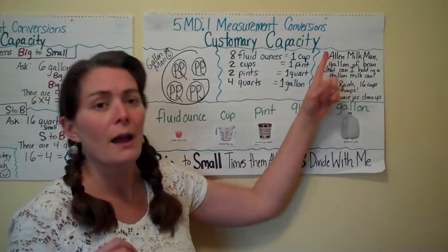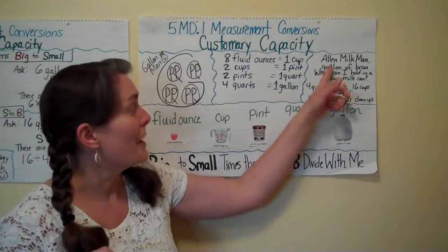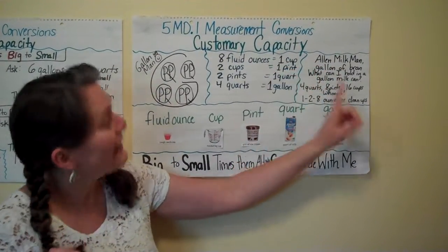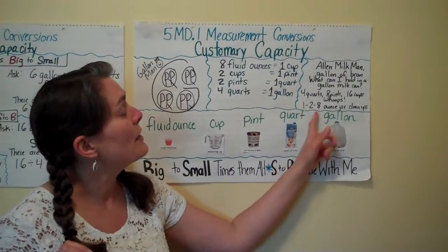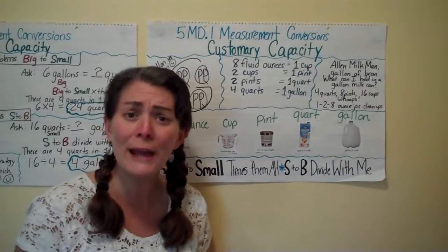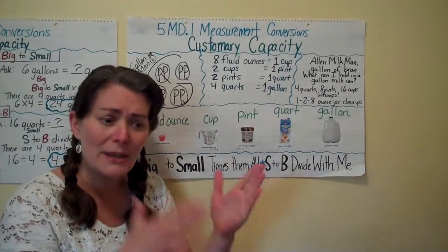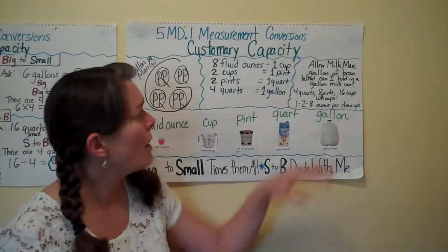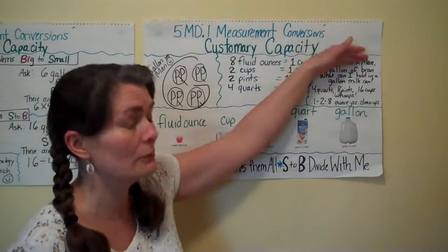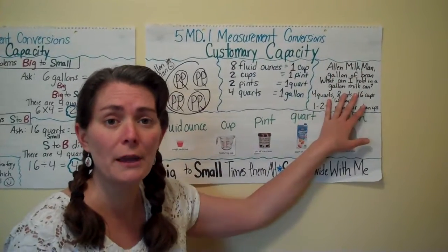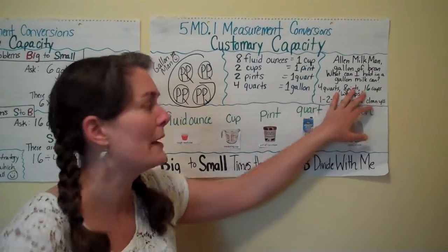That poem gives you the idea that a gallon is equivalent to 4 quarts, a gallon is equivalent to 8 pints, a gallon is equivalent to 16 cups, and a gallon is equivalent to 128 fluid ounces. This goes from larger to smaller in the Allen Milkman poem, which is part of your units poem if you want to look at that again.